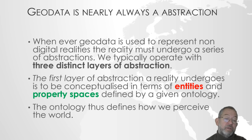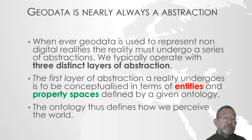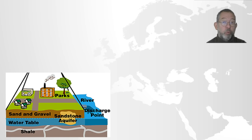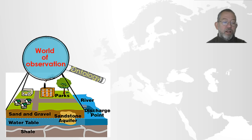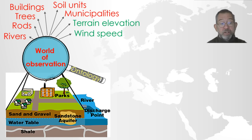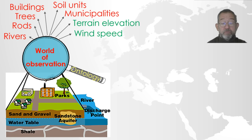Ontology is basically Greek, meaning 'what really exists'. The first thing we do is define what really exists in our world. If you look at a real world example, we can take our ontology and look through it — what we see we generally call our world of observation. In this case, we will see rivers, roads, trees, buildings, soil units, perhaps municipalities, terrain elevation, and wind speed.